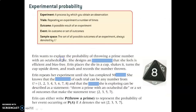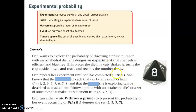Considering these words for an experiment, please take a moment to read this paragraph and fill in the blank spaces with the bold words shown. The answers are: experiment, trials, outcome, and event. Take another read through that if you got any of those incorrect.